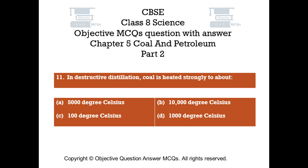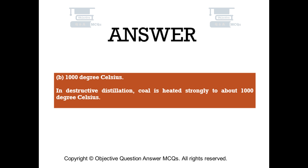Question number 11: In destructive distillation, coal is heated strongly to about — Option A: 5,000 degrees Celsius. Option B: 10,000 degrees Celsius. Option C: 100 degrees Celsius. Option D: 1,000 degrees Celsius. The right answer is 1,000 degrees Celsius. In destructive distillation, coal is heated strongly to about 1,000 degrees Celsius.